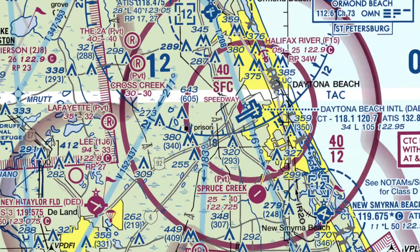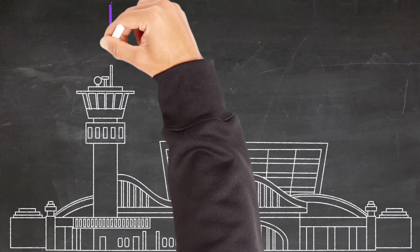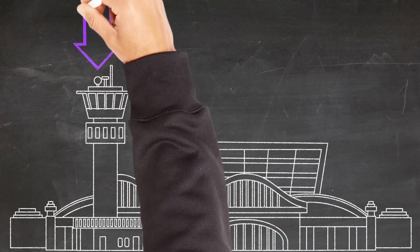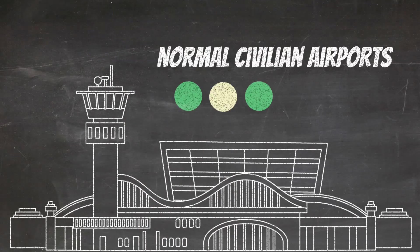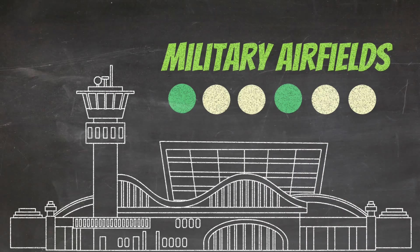If you look closer, you'll notice that this airport has a star on top of it. This indicates that this airport has a rotating beacon, and rotating beacons are important for a couple of reasons. First, they make it easier to find the airport at night. They also help you identify that you're at the correct type of airport. At normal civilian airfields, these beacons alternate between green and white, similar to the way this beacon is flashing now.